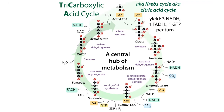Citrate is a tricarboxylic acid — it has three carboxylic acid groups. We're going to lose two of those CO2s, and both are actually going to come from the oxaloacetate, not from the acetyl-CoA. To actually get rid of the carbons from acetyl-CoA, we have to go through two more cycles. This pathway starts with citrate formation, carried out by the enzyme citrate synthase, which is one of our regulated steps.